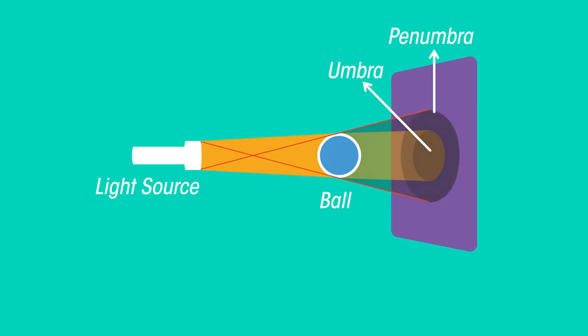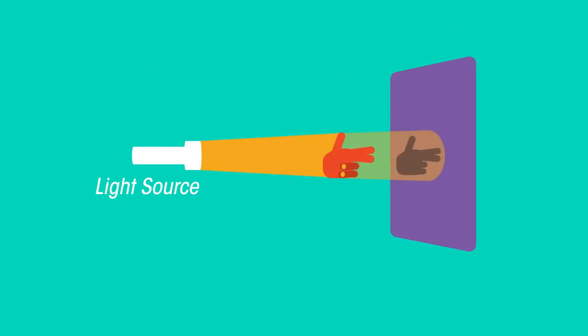The size of the umbra and penumbra depend on the size of the object and its position relative to the light source. Think of shadow puppets: if the light is closer to your hands, the shadow becomes bigger.